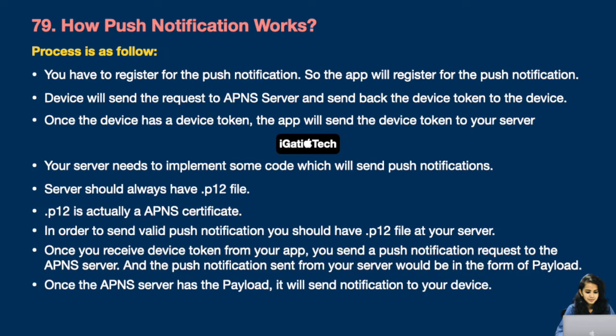Your server should have a P12 or P8 file as per your preference. P12 is actually an APNS certificate; in order to send valid push notifications, you should always have it at your server. Once you receive the device token from your app, you send a push notification request to the APNS server. The push notification sent from your server is in the form of a payload. Once the APNS server has the payload, it will send the notification to your device.